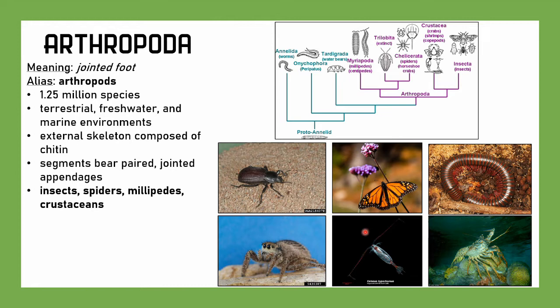Arthropods include the Myriapods — millipedes, centipedes — and trilobites, which are extinct. Chelicerata: those are spiders, horseshoe crabs, ticks. Crustaceans — things you either eat or your fish meal eats. And then insects.